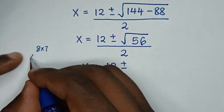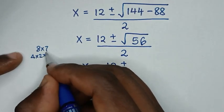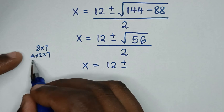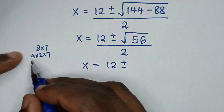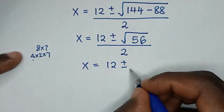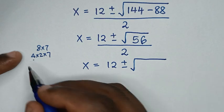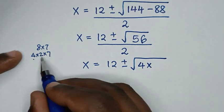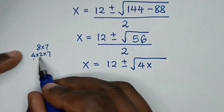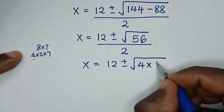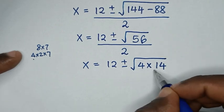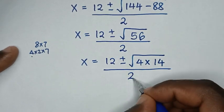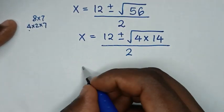Now, 8 is the same as 4 times 2, then times 7. Because 4 — you can find the square root of 4. So square root of 4 times 2 is prime, 7 is prime. So 2 times 7 is 14, and 4 times 14 is 56. Then over 2.